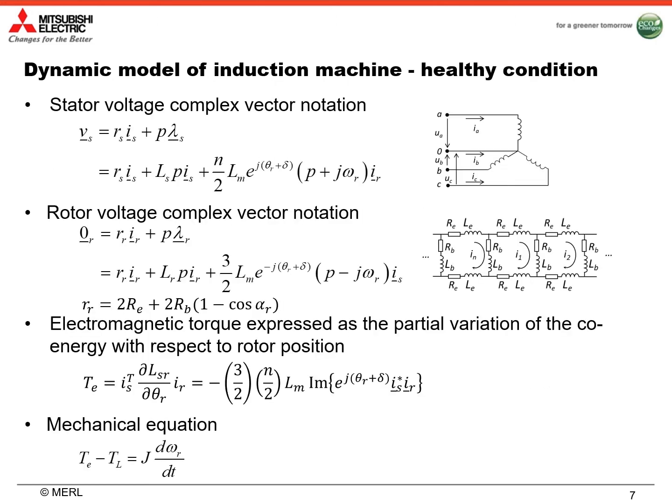In healthy condition, the dynamic model of induction machine can be illustrated using the following equations. The first one is the stator voltage equation in complex vector notation. The second one is the rotor voltage equation in complex vector notation. The third one is electromagnetic torque with respect to the rotor position. And the fourth one is the mechanical equation. Given the stator voltage and all the induction machine parameters, we can use this dynamic model to simulate the stator current, the torque, and the rotor speed.